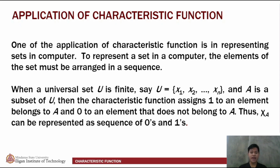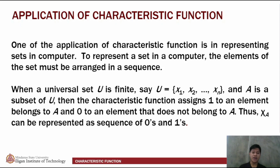Now, for the application. One of the applications of the characteristic function is in representing sets in a computer. To represent a set in a computer, the elements of the set must be arranged in a sequence. Aside from using zeros and ones to represent ordinary numbers in binary form, it is also used to identify true or false in computer logic, wherein we use zero for false and one for true. When a universal set U is finite, and A is a subset of U, then the characteristic function assigns 1 to an element that belongs to A, and 0 to an element that does not. Thus, the characteristic function of A can be represented as a sequence of zeros and ones.